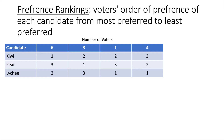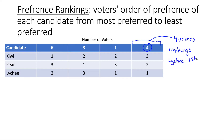Here we have an example of a preference ranking table and we'll talk about how to read it. The top row tells us the number of voters, and all of the numbers underneath give us the preference ranking or order of preference. Looking at the first column, the four up here tells us we have four voters. They've ranked Lychee first, meaning they like it most out of all the candidates.